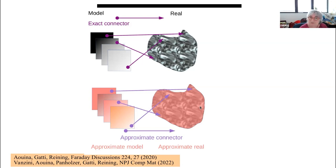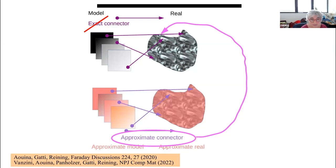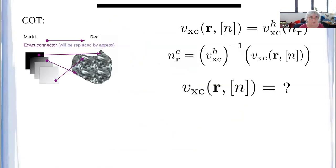We use the same approximation for both the model and the real material — for example making both interaction-free — and then we think that in this approximate system we can find the connector. Once we have found this approximate connector, we inject it into the relation between the true model and the real material. The idea is that by making the same approximation on both sides, we benefit from error cancellation. As an exercise for DFT: we are asking for the exchange-correlation potential of the real material, which we know we can get from the homogeneous electron gas at a given density that we have to find. This is a monotonic function we could invert in principle.